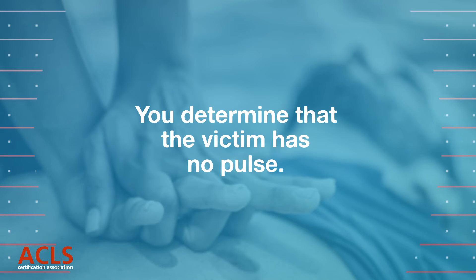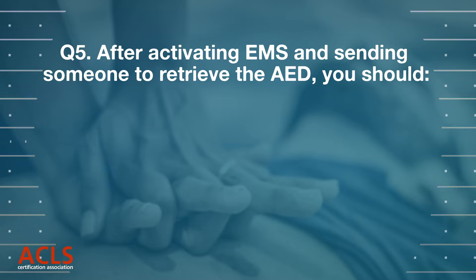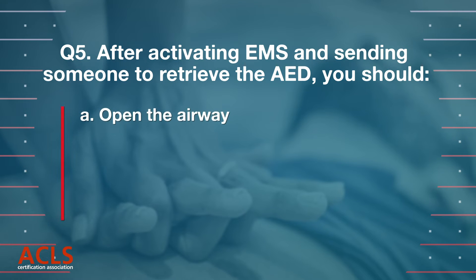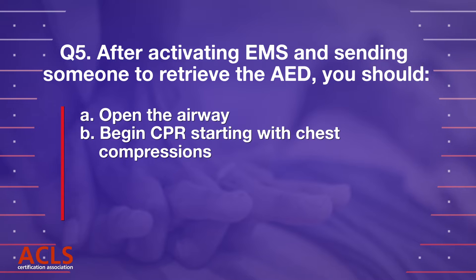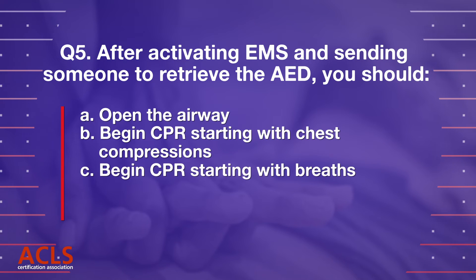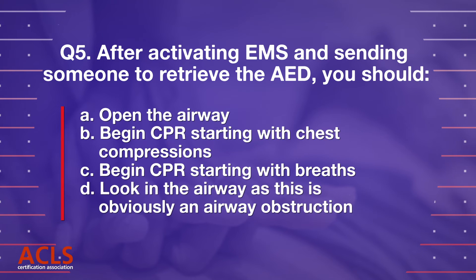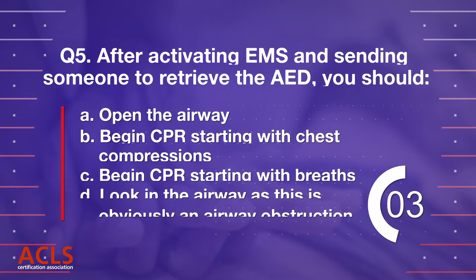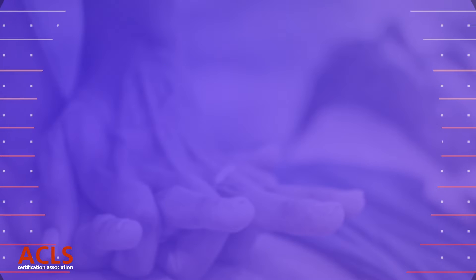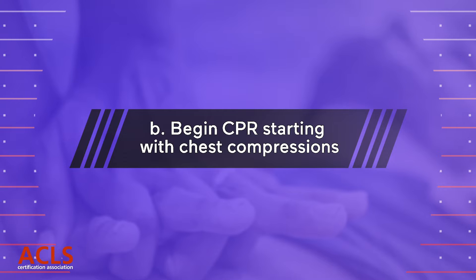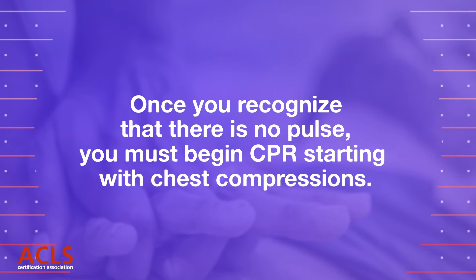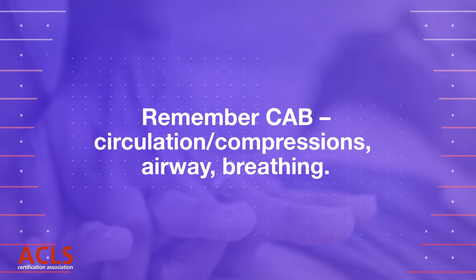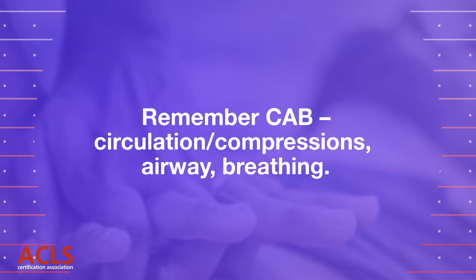You determine that the victim has no pulse. Question 5: after activating EMS and sending someone to retrieve the AED, you should — A) open the airway, B) begin CPR starting with chest compressions, C) begin CPR starting with breaths, D) look in the airway as this is obviously an airway obstruction. Correct answer: B, begin CPR starting with chest compressions. Once you recognize that there is no pulse you must begin CPR starting with chest compressions. Remember CAB: circulation or compressions, airway, breathing.